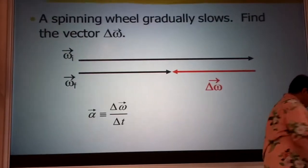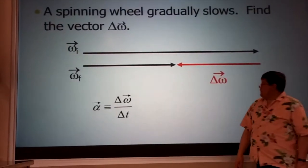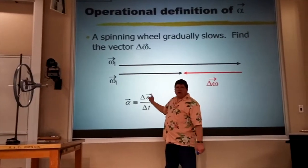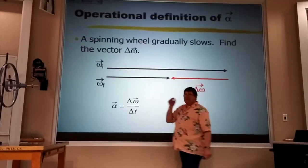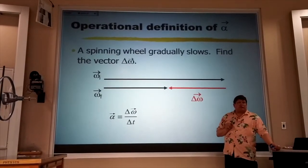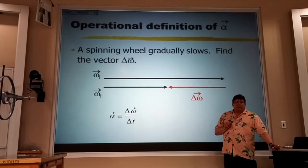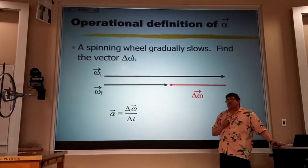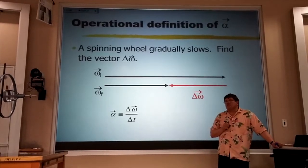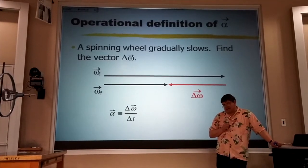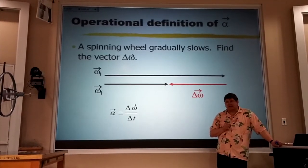Now, if we use that definition, we see that alpha always, always, always — every stinking time — has to point in the same direction as the change in omega vector. Turn to your neighbor Nimrod and explain why that is so, and use the word DeLorean.